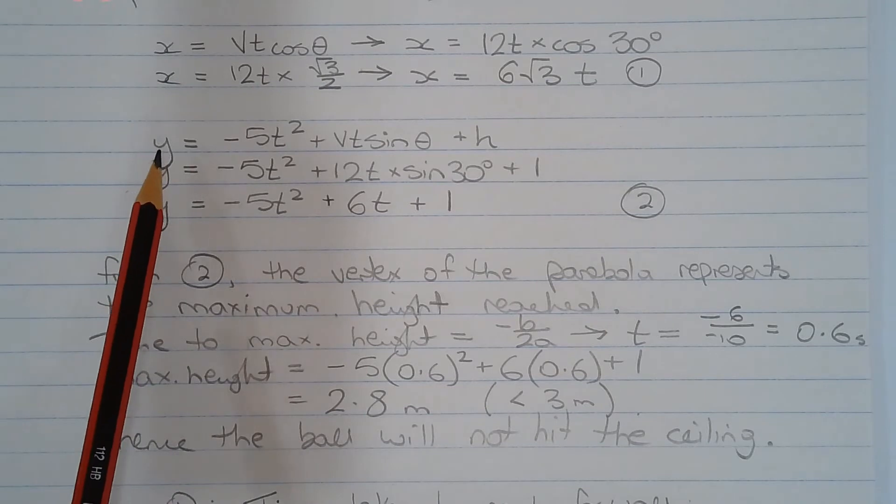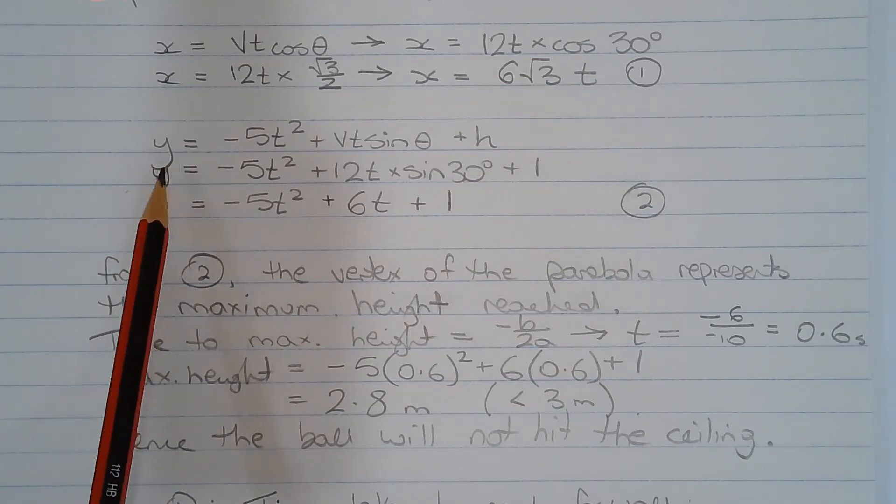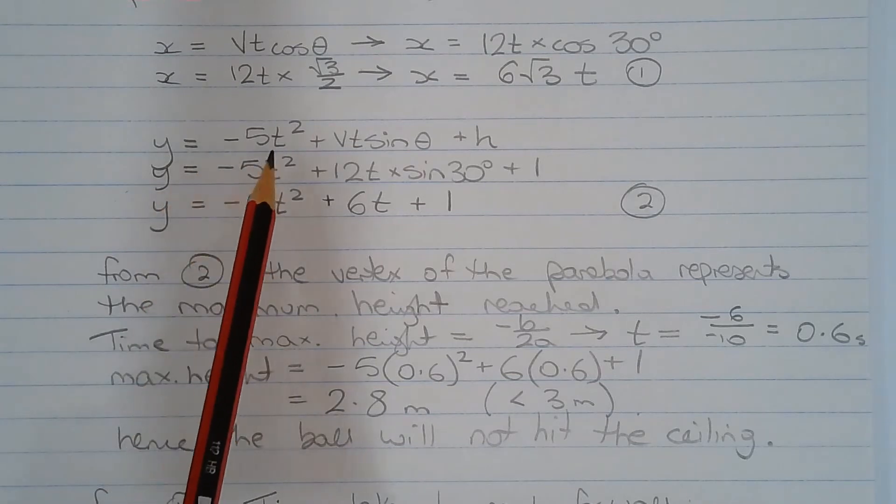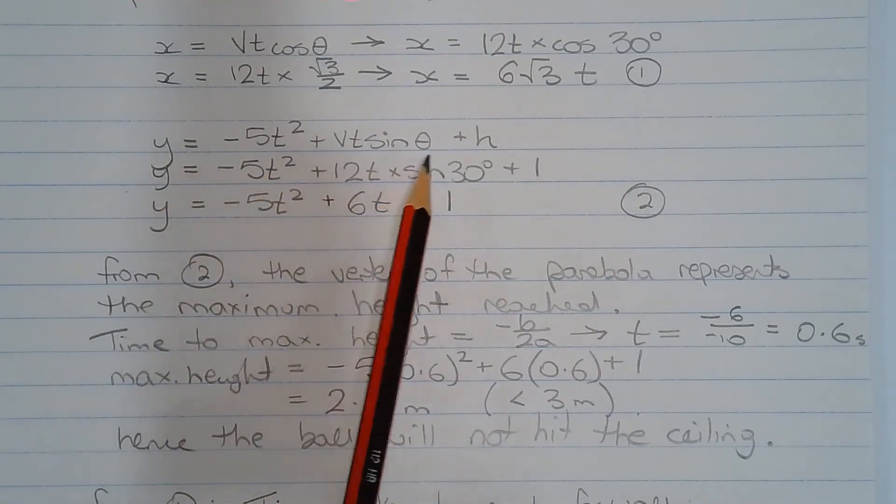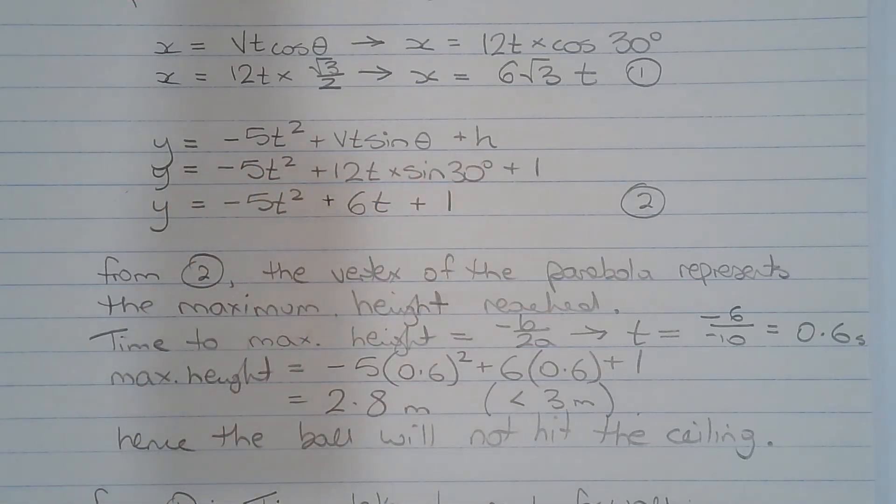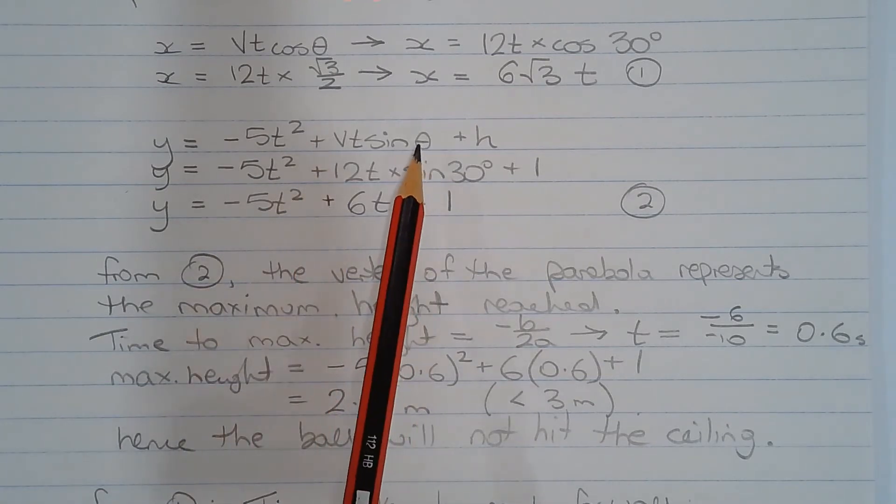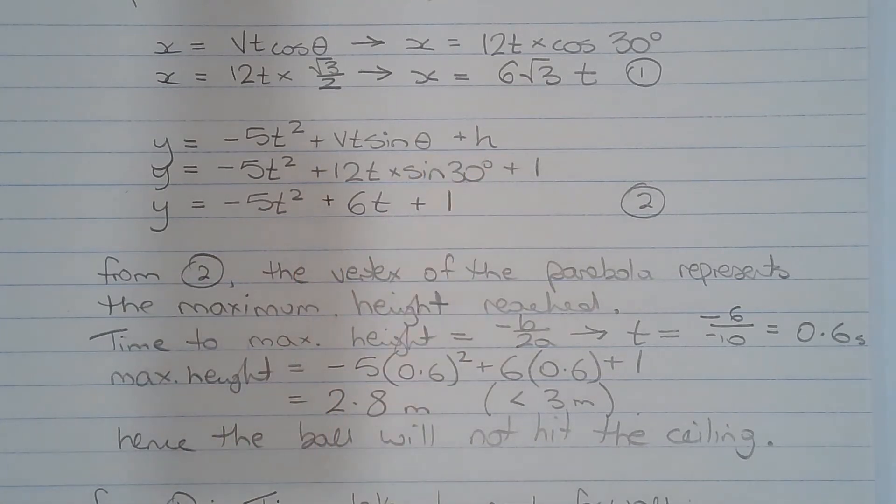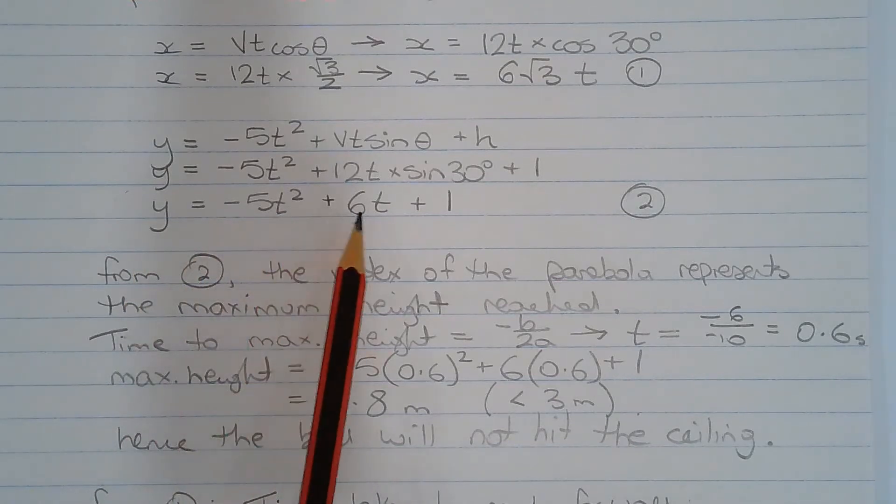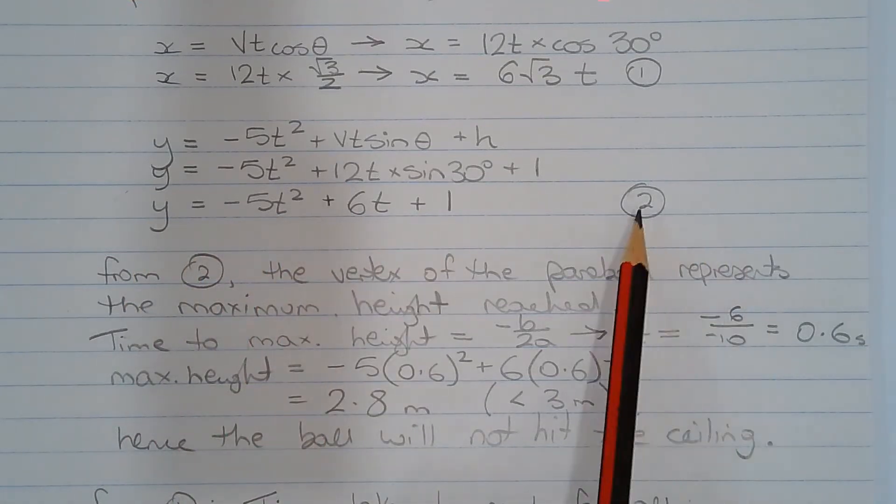The equation that gives the displacement of the ball in the vertical direction or the y direction with respect to time is y equals negative 5t squared plus vt sin theta plus h. And substituting in v equals 12, theta is equal to 30 degrees and h equals 1, we get y equals negative 5t squared plus 6t plus 1. We'll call that equation number 2.